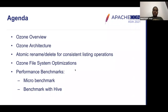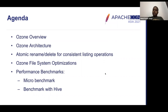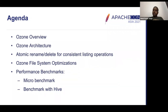So let's quickly go through the agenda. We'll be covering a few things here. We'll start with the overview of Ozone and then how we have architected it — what are some of the important pieces of Ozone. Then we'll specifically go into the performance aspects on how Ozone becomes a high-performance object store, talking about how we implemented atomic renames and deletes, and then presenting some micro benchmarks as well as application-based benchmark samples.